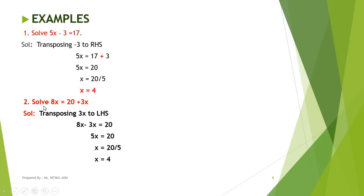Second example: solve 8x equals 20 plus 3x. The variable x appears on both sides, but we keep the variable in LHS. Transpose 3x to LHS — it is positive, so after transposing it becomes minus. Now we have 8x minus 3x equals 20. Taking x as common: (8 minus 3)x equals 20, giving 5x equals 20, and therefore x equals 4.